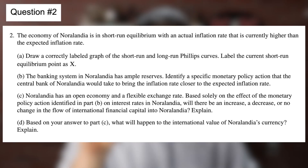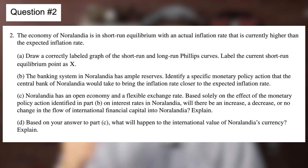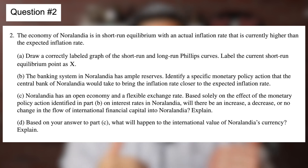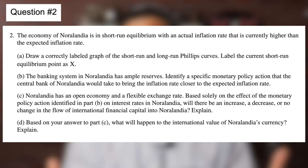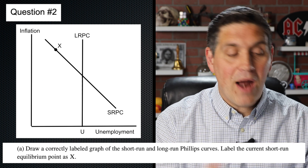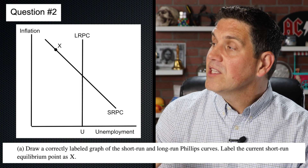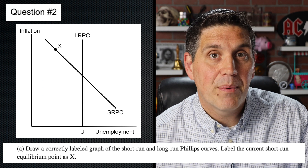In free response number two, it starts off by asking you to draw the Phillips curve. It says the actual inflation rate is currently higher than the expected rate of inflation, which means we have an inflationary gap or a positive output gap. And if I may — I told you so. The correct graph for A would look like this with a point X showing this idea of an inflationary gap.